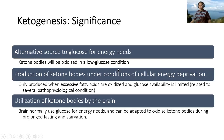Now let's see the significance of ketogenesis. Ketogenesis is an alternative to glucose for energy needs. Ketone bodies will be oxidized in low glucose conditions, and ketogenesis produces ketone bodies under conditions of cellular energy deprivation. It is only produced when excessive fatty acids are oxidized and glucose availability is limited, such as in several pathophysiological conditions. The brain normally uses glucose for energy and can adapt to oxidize ketone bodies during prolonged fasting and starvation.